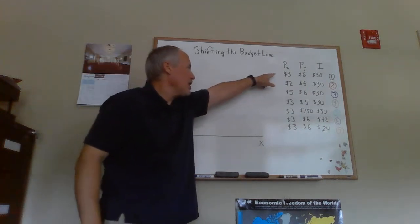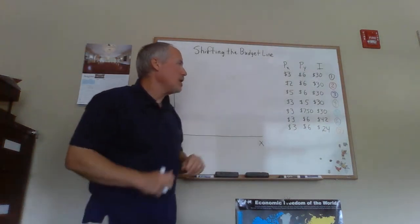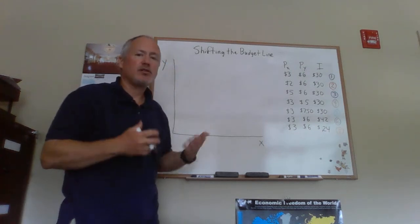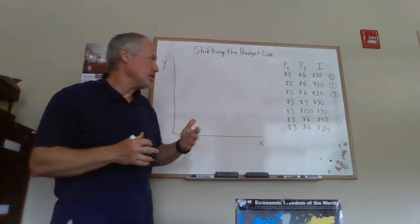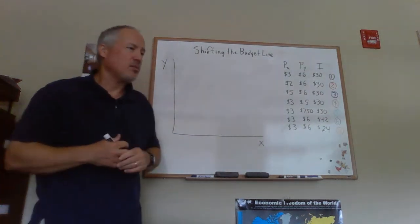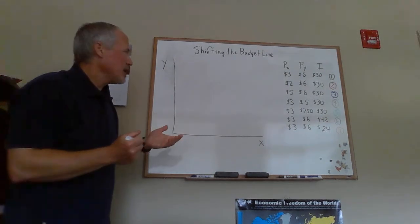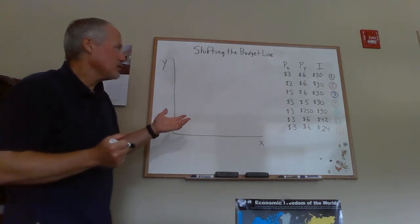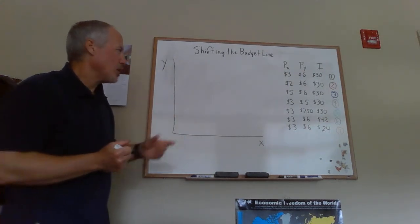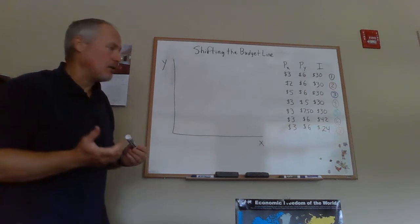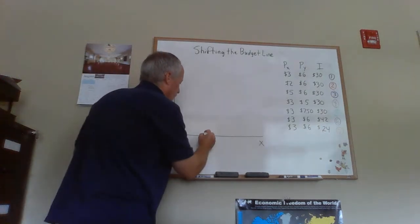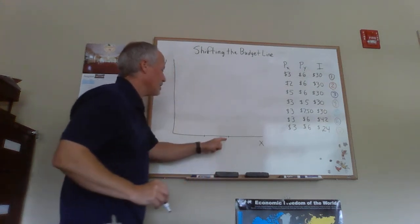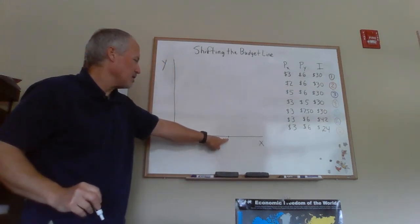So we're going to start with budget line number one and graph that, and then look at what happens as we change the prices of the different goods and what happens exactly to the budget line. In the first case, we have a price of $3 for X, a price of $6 for Y, and the income of $30. To graph this case, what we do is figure out how much on the X axis you'd be able to buy if you buy all X.